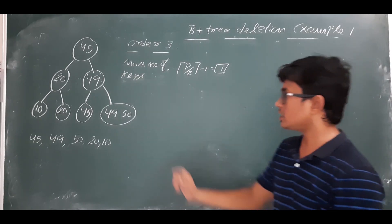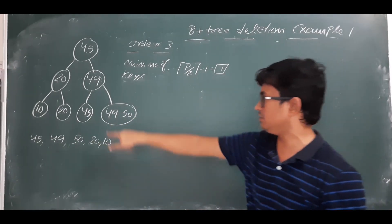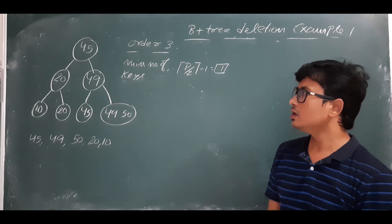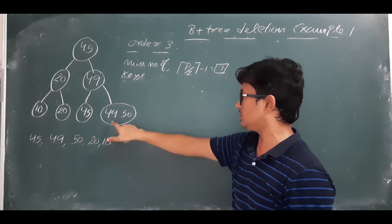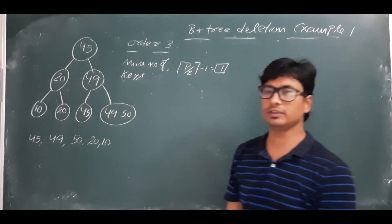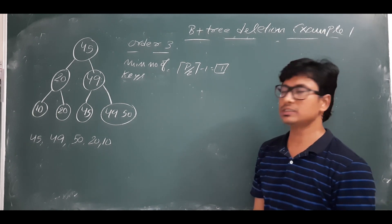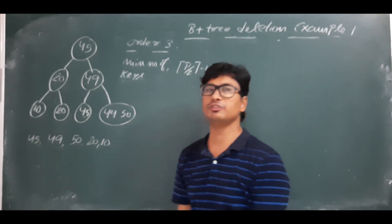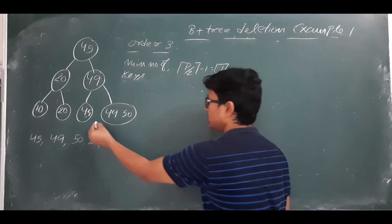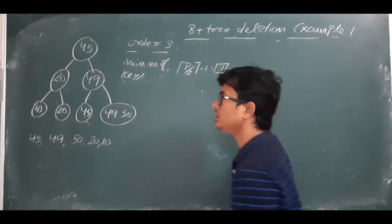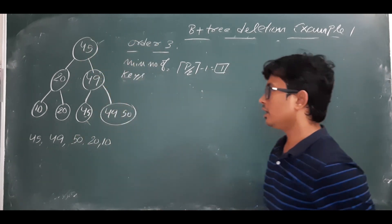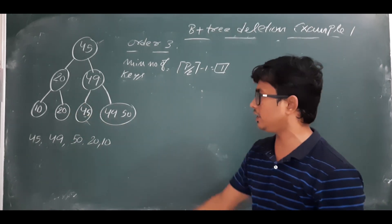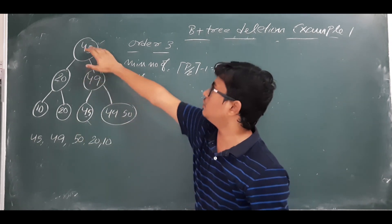When deleting elements from a B+ tree, we should be careful. For example, 45 is present both in the leaf node and in the root node. Similarly, 49 is in the leaf node and also in an internal node. The key rule is: always start deleting from the leaf node first, then handle the internal/root node.